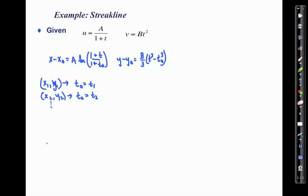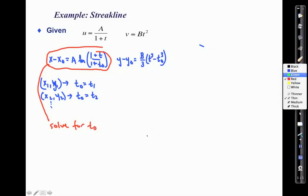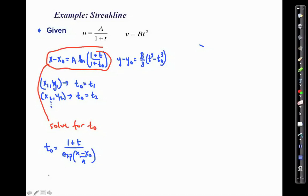If we want to come up with a function for this, what we need to do is eliminate the t_naught from these two equations. So we're going to solve this equation up here for t_naught. When doing so, what we get is t_naught is equal to (1 plus t) divided by the exponent of (x minus x_naught) divided by a, minus 1.